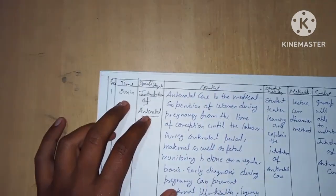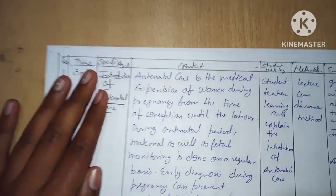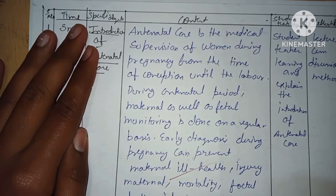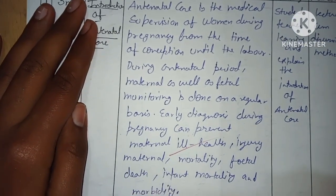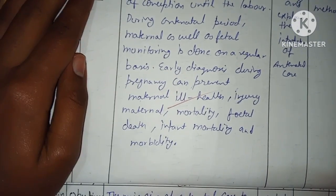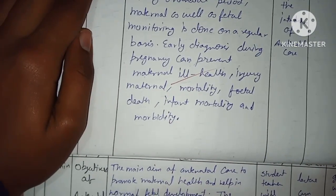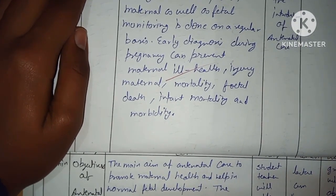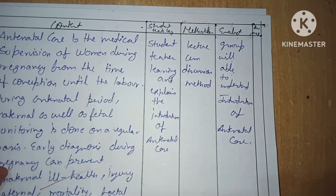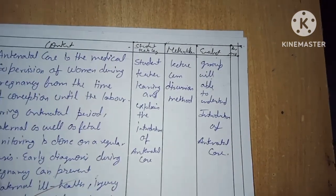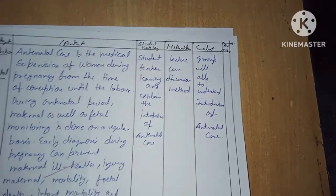First point — time: five minutes. Specific objective: introduction of antenatal care. Content: antenatal care is the medical supervision of women during pregnancy from the time of conception until labor. During the antenatal period, maternal as well as fetal monitoring is done on a regular basis. Early diagnosis during pregnancy can prevent maternal ill health, injury, maternal mortality, fetal death, and infant mortality and morbidity. Method: lecture cum discussion. Evaluation: group will be able to understand the introduction of antenatal care.